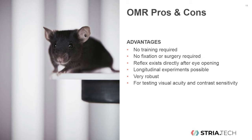Using the optomotor reflex to find the animal's visual threshold can be very convenient. Because it is a reflex, there is no training required — any naive animal can be tested right away. The animal does not need to be restrained and does not require surgery. This reflex exists at the time of eye opening, so it is possible to characterize and follow the animal's vision even for early onset retinal diseases.